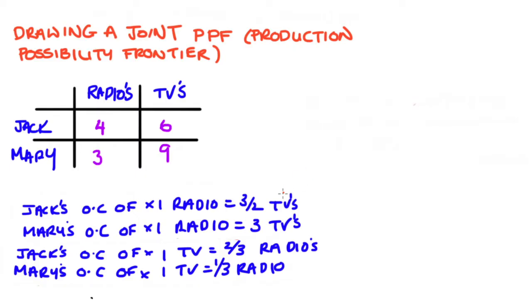The second thing I have, which you'll need to have on hand from whatever question or example that you're thinking about, is the opportunity cost for each of your producers concerning the goods that they are making. So I have Jack and Mary's opportunity costs of radios and TVs.